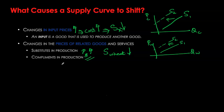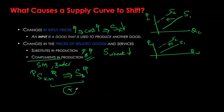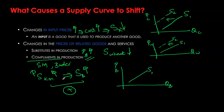Complements in production are goods produced out of the same production process — one process yields multiple goods, or one is a byproduct of the other. For example, skimmed milk and butter: the more skimmed milk you produce, the more butter or cream you automatically produce. If the price of skimmed milk increases, producers supply more skimmed milk, and as a result supply of butter also increases. This shows a positive relationship between the price of a related complement good and supply of the byproduct.